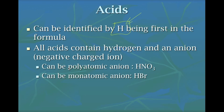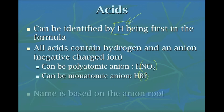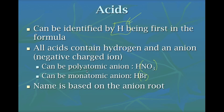We have two types of anions. We have a polyatomic up here — nitrate — and a monatomic down here — bromine. Hydrogen can bond to either one, and the name of an acid is based off the anion root: nitrate here, bromine there.